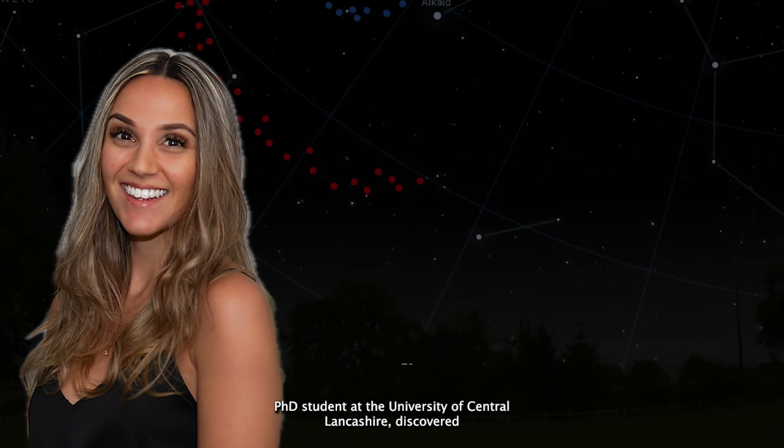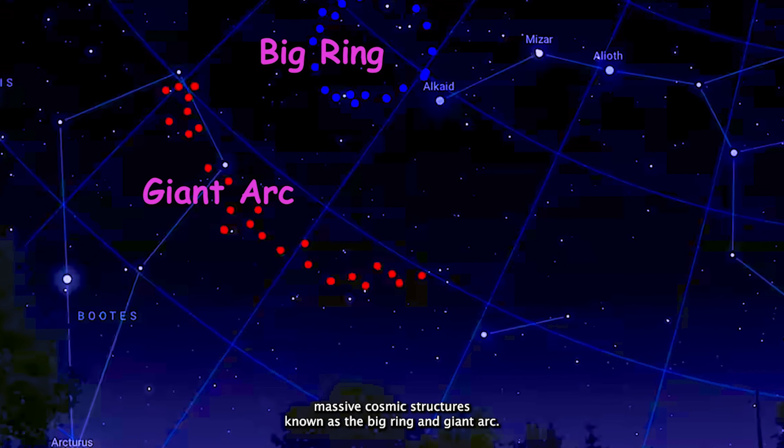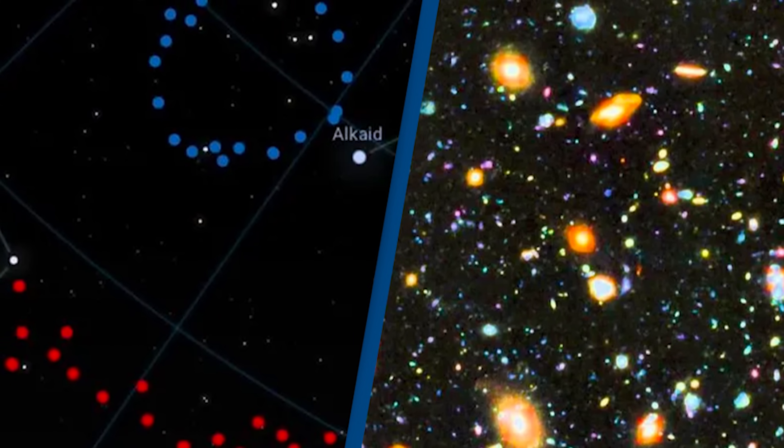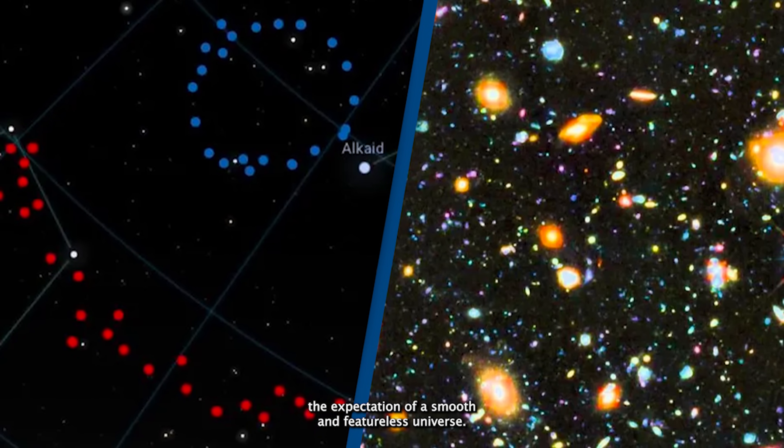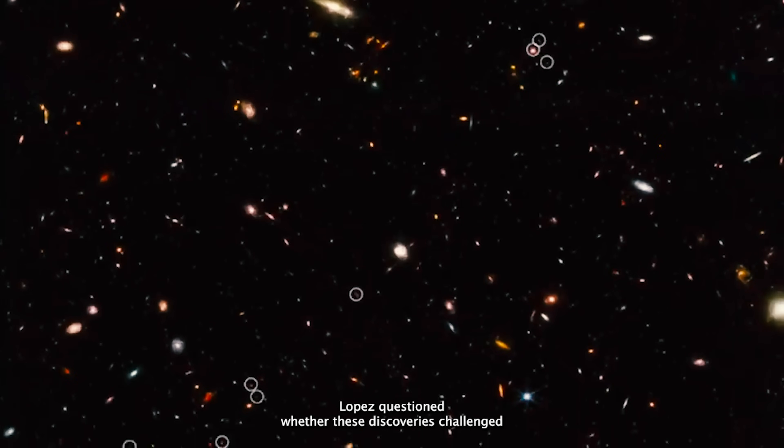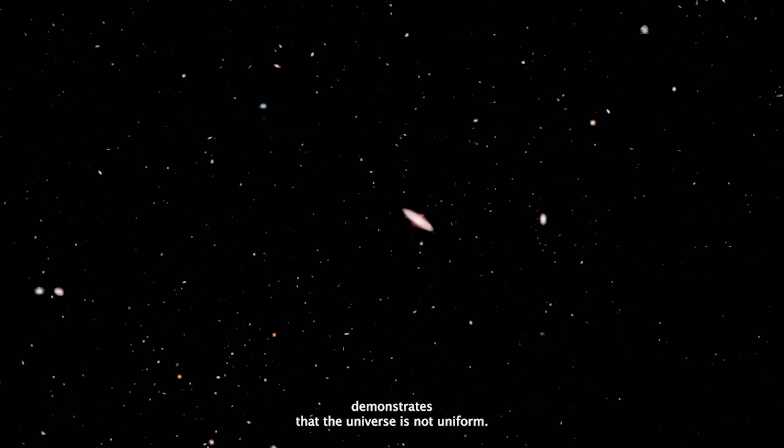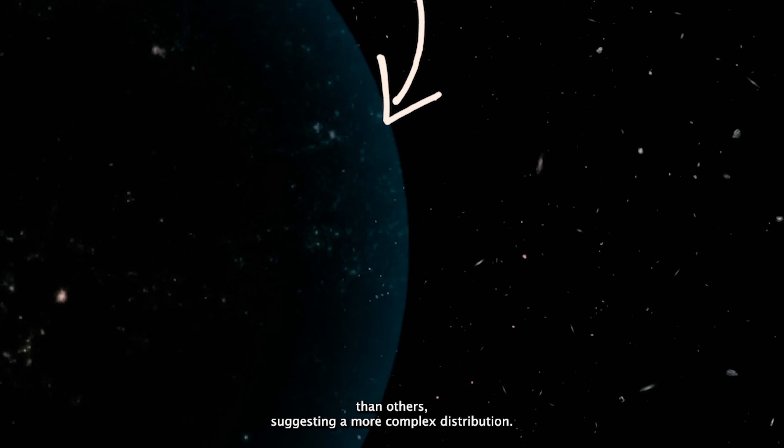Furthermore, Alexia Lopez, a PhD student at the University of Central Lancashire, discovered massive cosmic structures known as the Big Ring and Giant Arc. These shapes, made up of galaxies and galaxy clusters, span such vast scales that they contradict the expectation of a smooth and featureless universe. Lopez questioned whether these discoveries challenge the basic assumption of uniformity in cosmology, suggesting that our standard model may need revaluation. The identification of such large and dense structures demonstrates that the universe is not uniform. Some areas have significantly more matter than others, suggesting a more complex distribution.